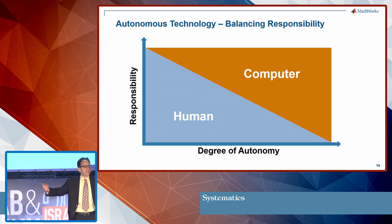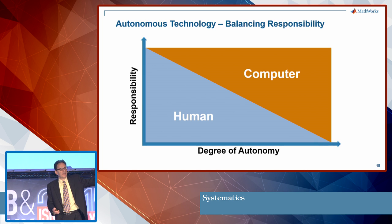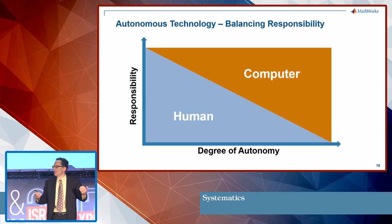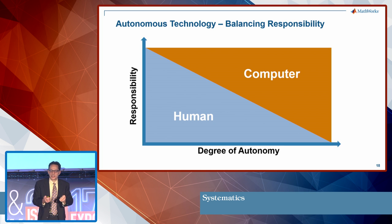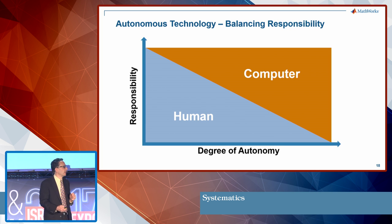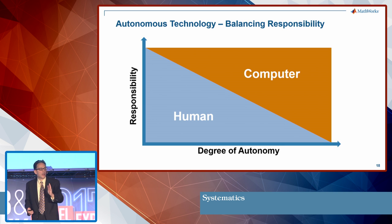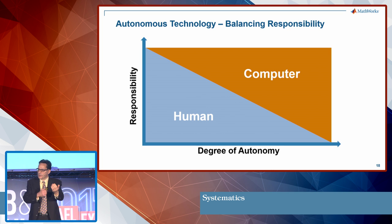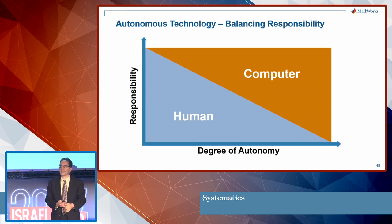With the self-driving car, there is a continuum — a degree of autonomy. The self-driving car is all the way to the right, at level five, where the computer is basically doing everything. But there are very important applications where there is a blend between what the computer does and what the human does. You have to figure out where the optimal place is for your application on this continuum — from some human interaction all the way to the computer doing everything.